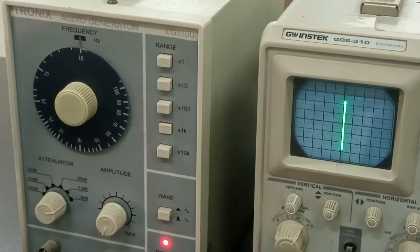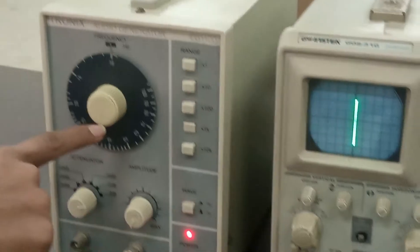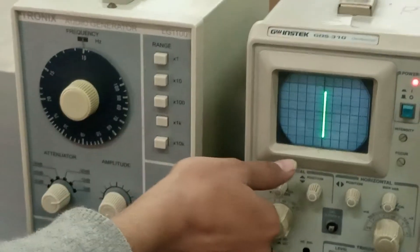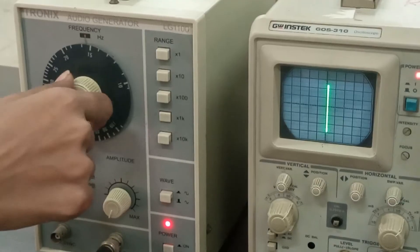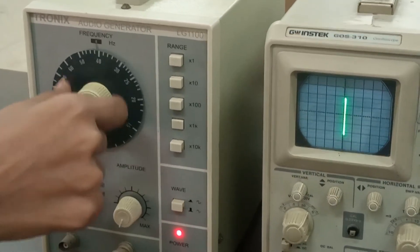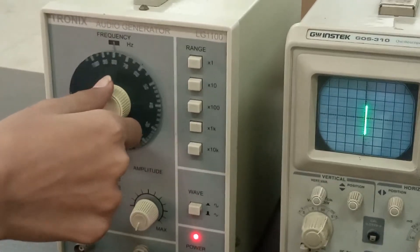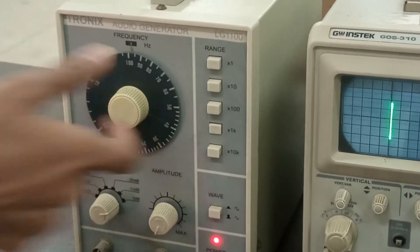The frequency is the independent parameter here, because by changing the frequency the amplitude is changing, and the amplitude is the dependent parameter. So that's all about the procedure of the rejector circuit. I hope it will be clear to all.